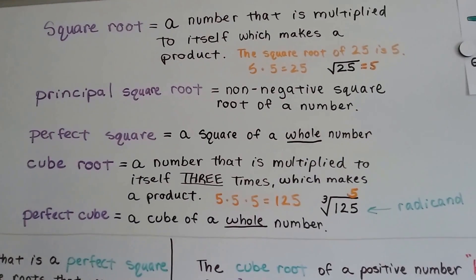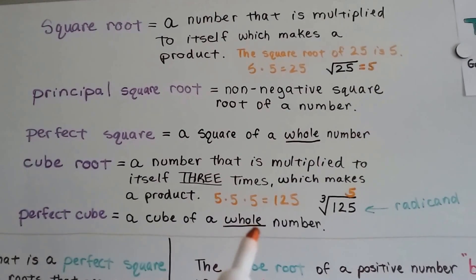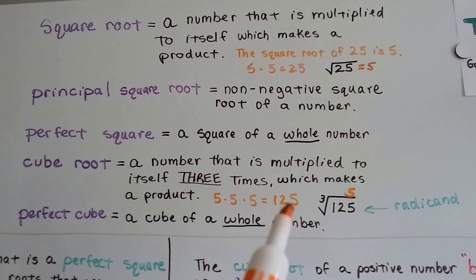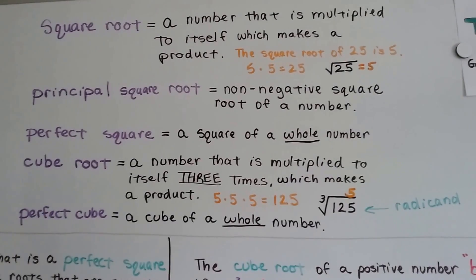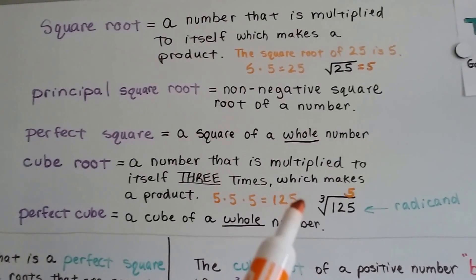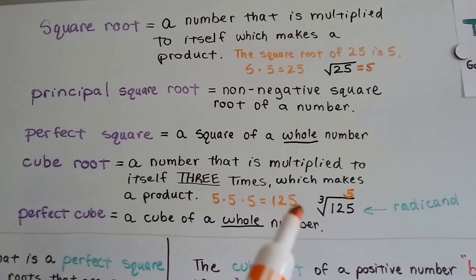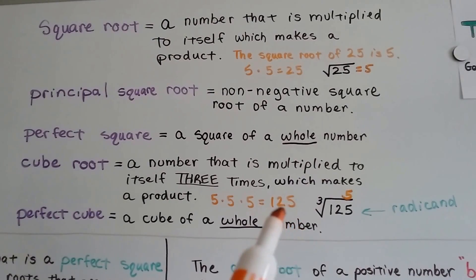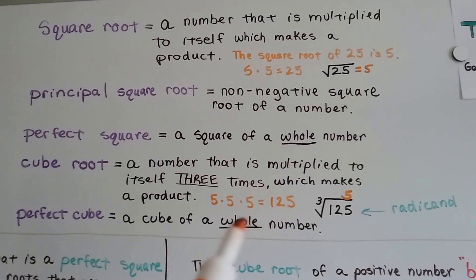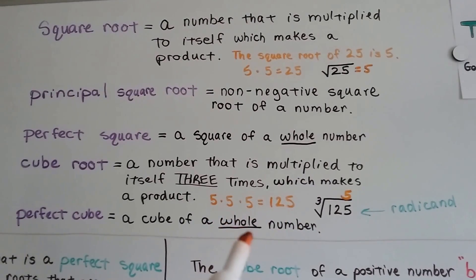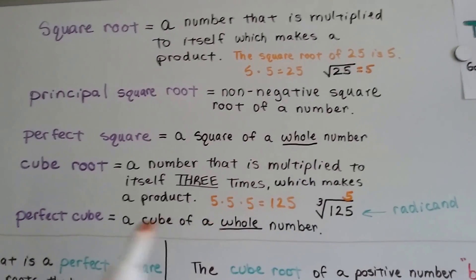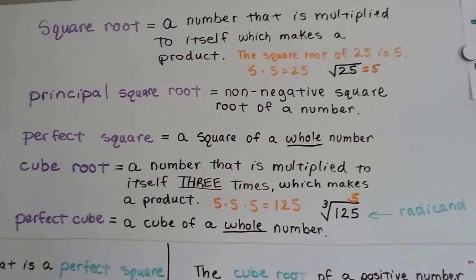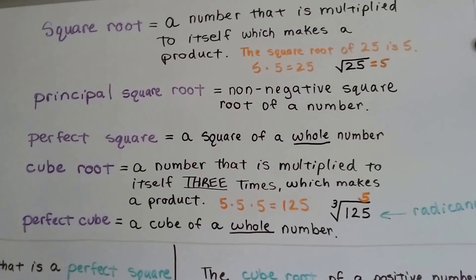A perfect cube is the cube of a whole number, like 125. If this were a decimal or a fraction, and it wasn't a whole number, it wouldn't be a perfect cube.